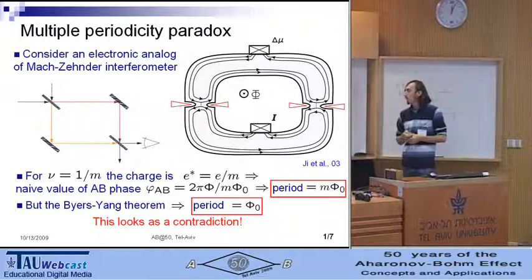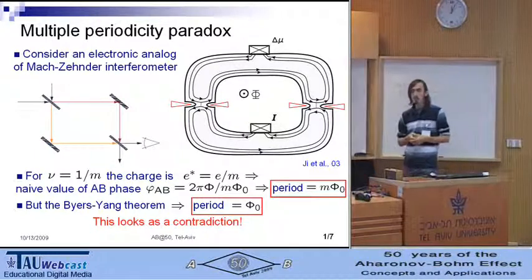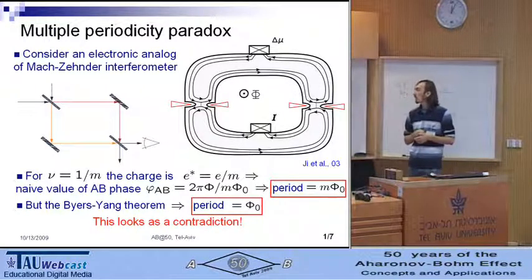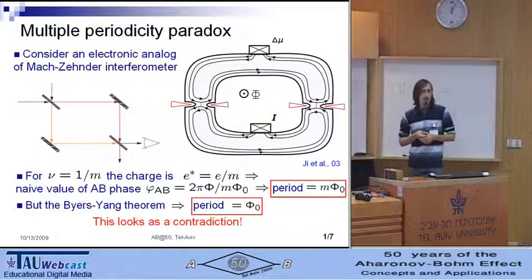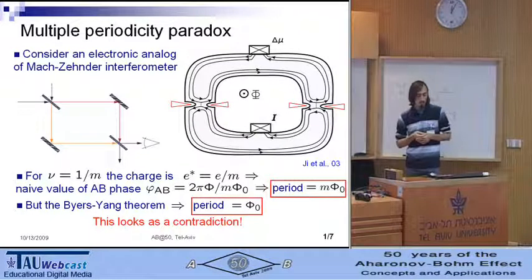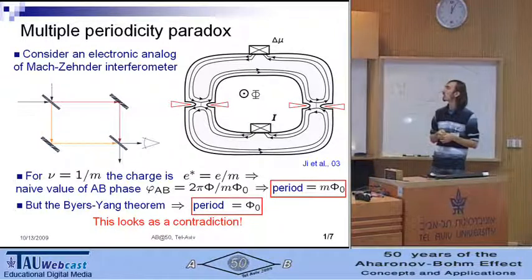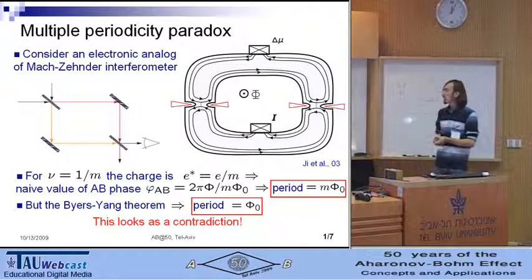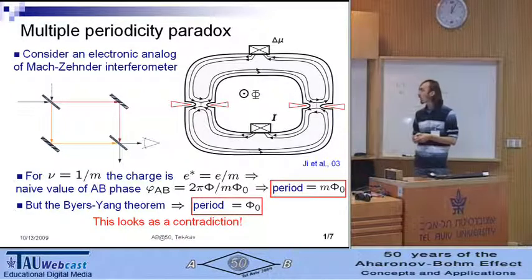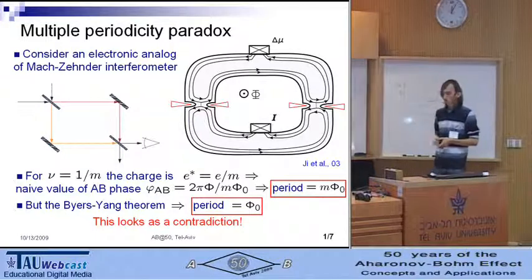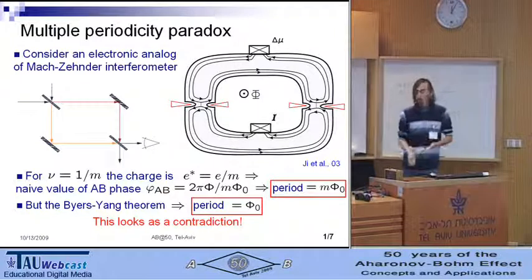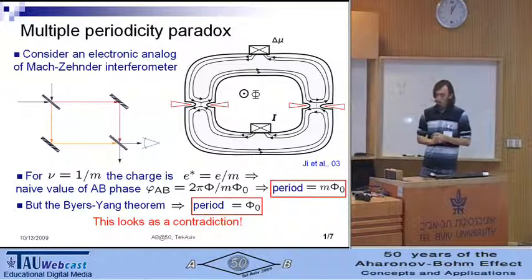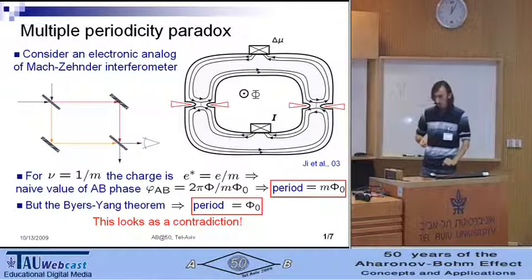But from the other point of view, the Byers-Yang theorem states that for an arbitrary electronic system, if we insert a flux quantum, this system relaxes to the same state as before the insertion. Thus, all the observables in electronic systems, and our interferometer is made of electrons, should have the periodicity with flux quantum.